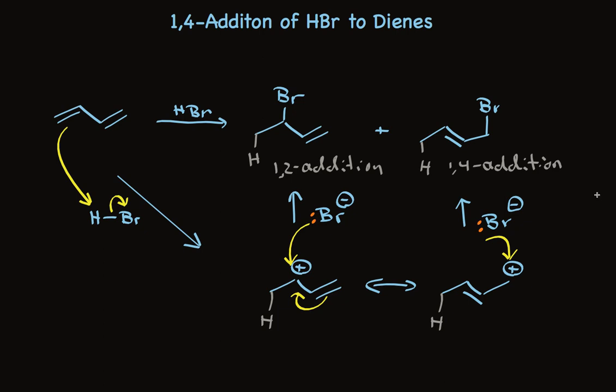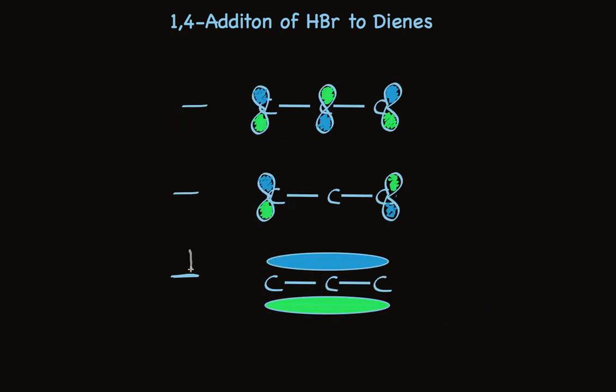MO theory leads us to the same conclusion. The allylic carbocation has two electrons. They're in pi 1, the bonding MO, and the positive charge is in pi 2, the non-bonding MO. This non-bonding MO looks like the middle graphic here, so we see that the positive charge is at the ends of this pi system, and never in the middle. So bromide will react at the ends of this allylic system.